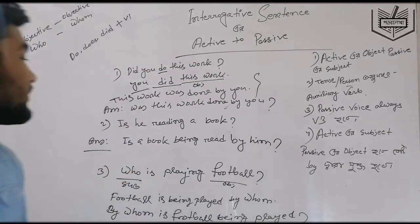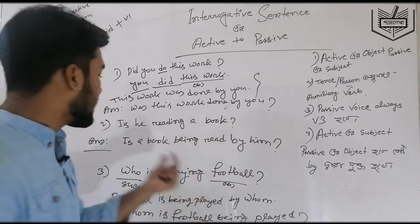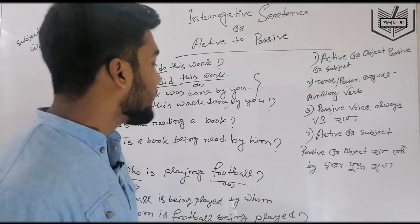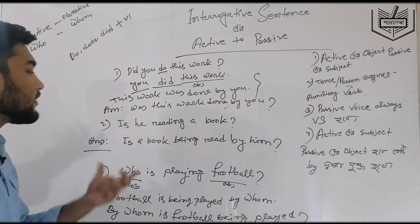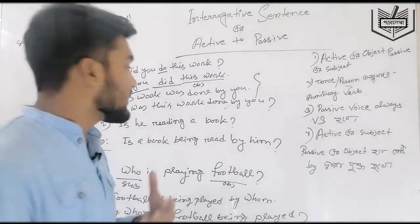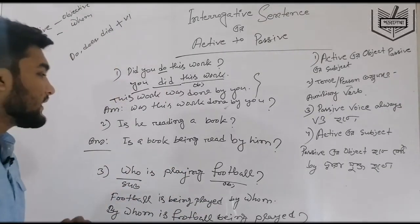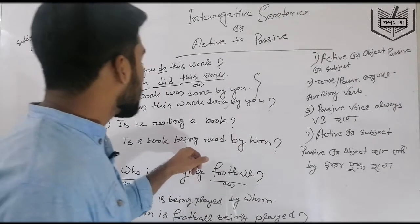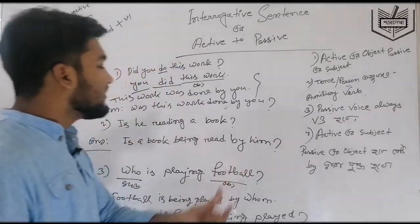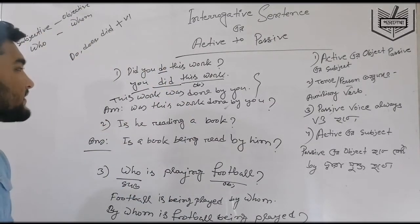The second example: 'Is he reading a book?' — active interrogative. The passive becomes: 'Is a book being read by him?' Obviously for present continuous, the passive uses 'being' + V3. The ING tag in active becomes 'being' in the passive. So 'reading' becomes 'being read'. The final passive is: 'Is a book being read by him?'